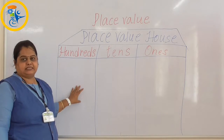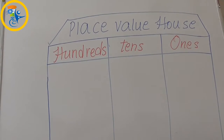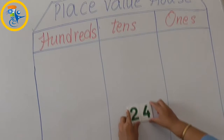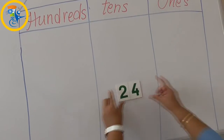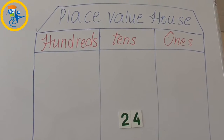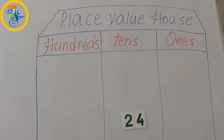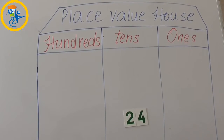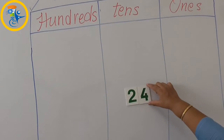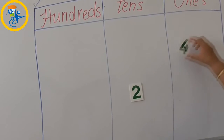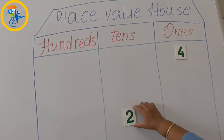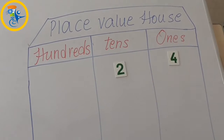Now let us take the number 24. This is a two-digit number. So as per the rule of this house, I cannot place two digits in one room. So what I am going to do is place 4 at the ones place and 2 at the tens place.